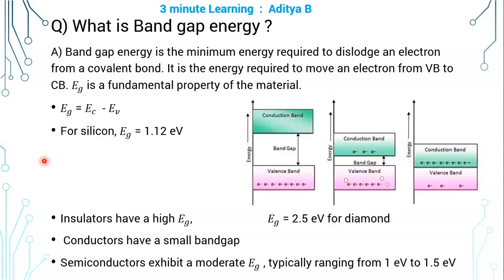Energy band gap is the minimum amount of energy required to break a covalent bond and remove the electron from the covalent bond. It is the energy required to move an electron from valence band to the conduction band.